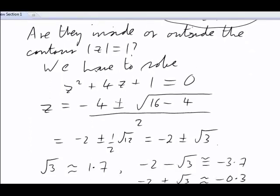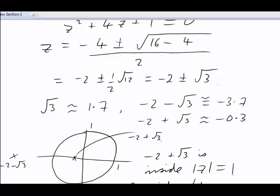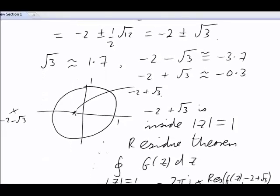I want to progress quite quickly now. Here were the roots for f of z, the places where that denominator is zero: negative two plus or minus the root of three. And we decided that one of them was inside the circular contour.